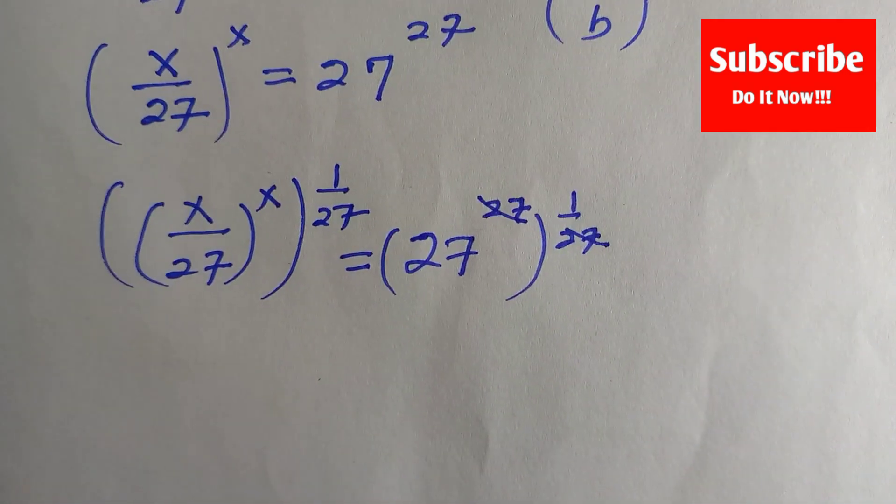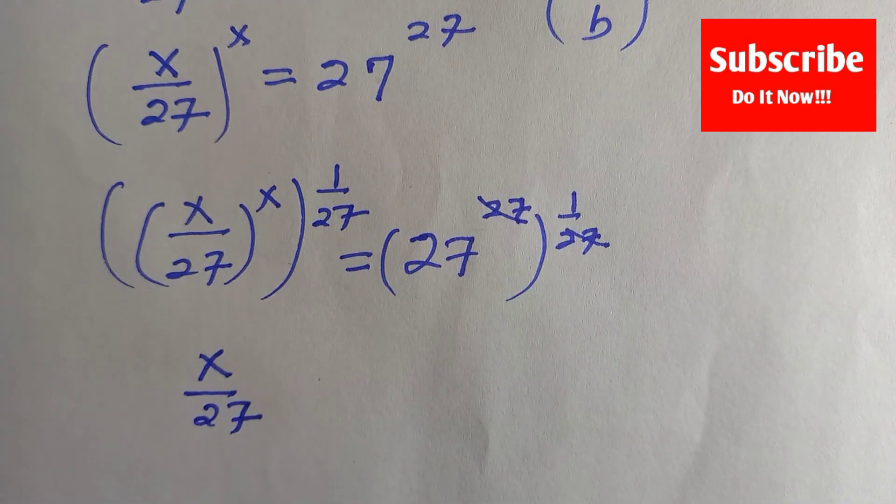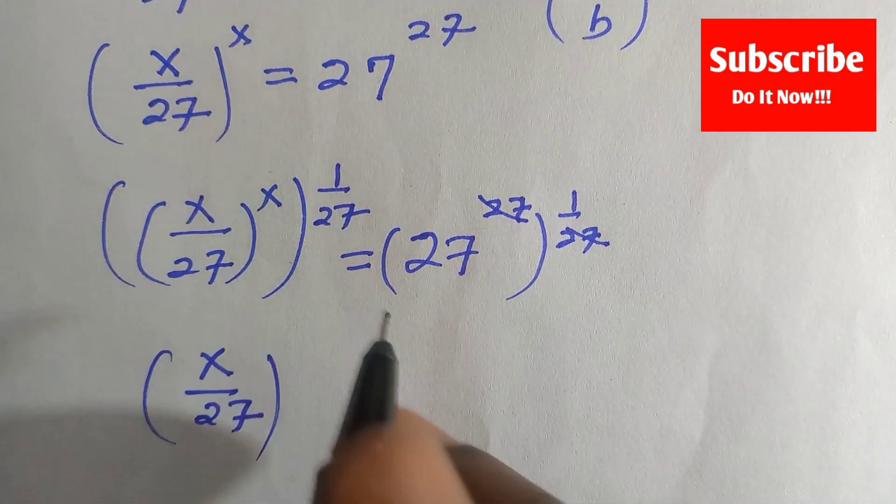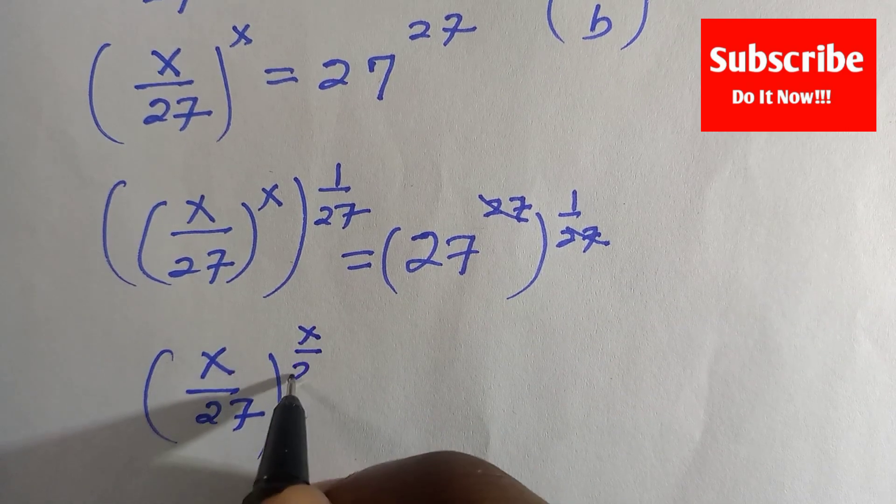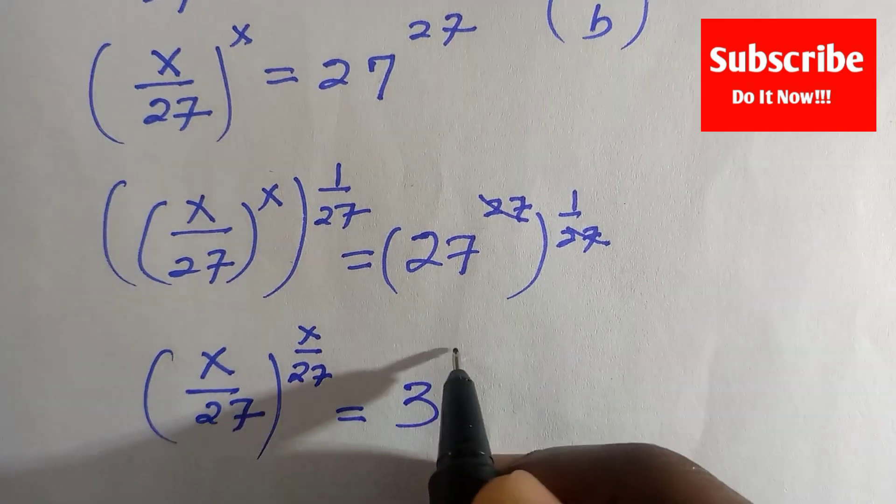At this stage we are going to have x/27. If you multiply x by 1/27, we have x/27 equals to 27, that is 3^3.